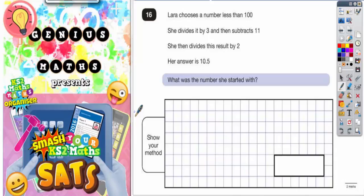Question 16. Laura chooses a number less than 100. She divides it by 3, then subtracts 11, then divides this result by 2. Her answer is 10.5.